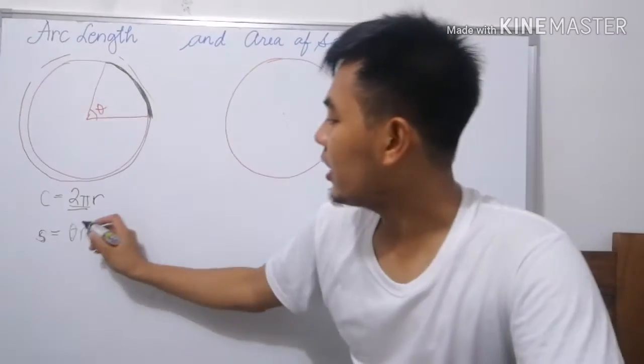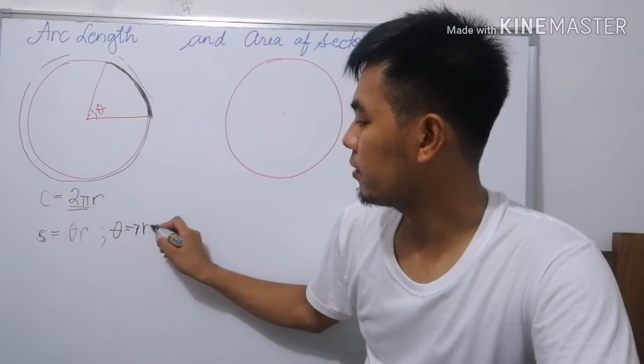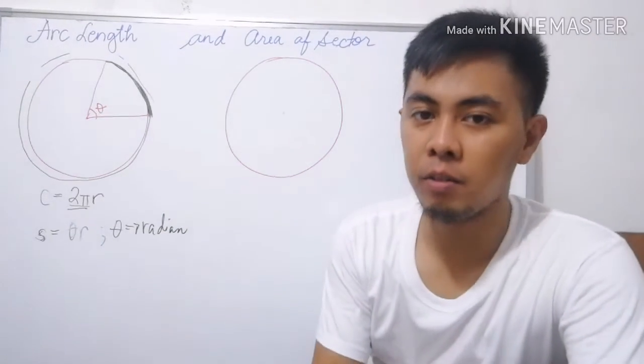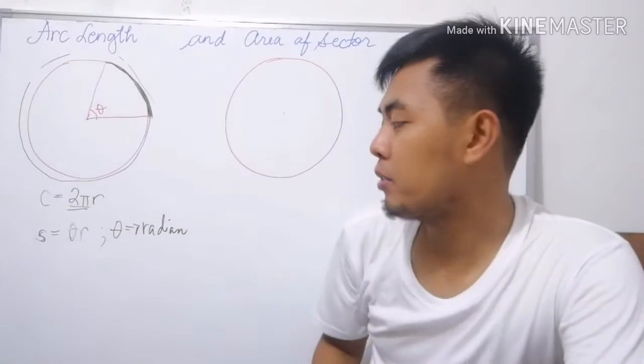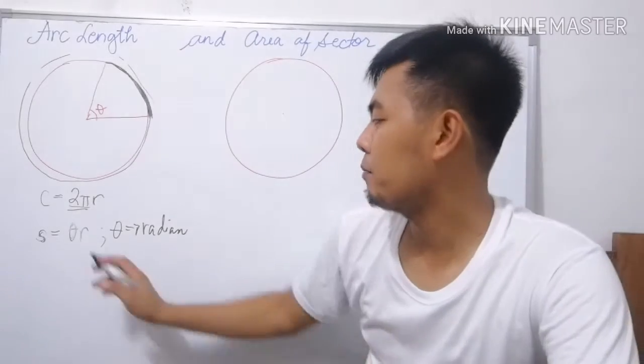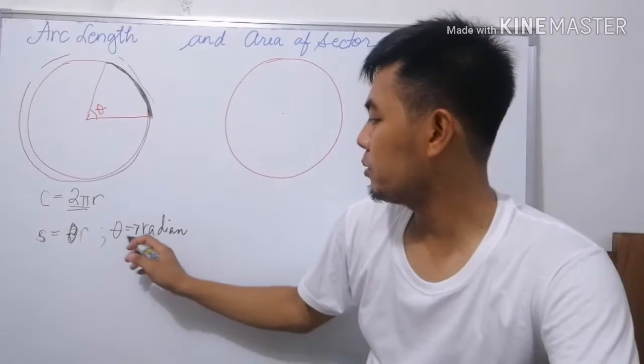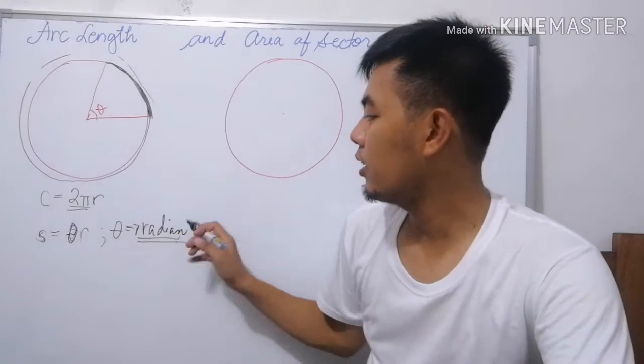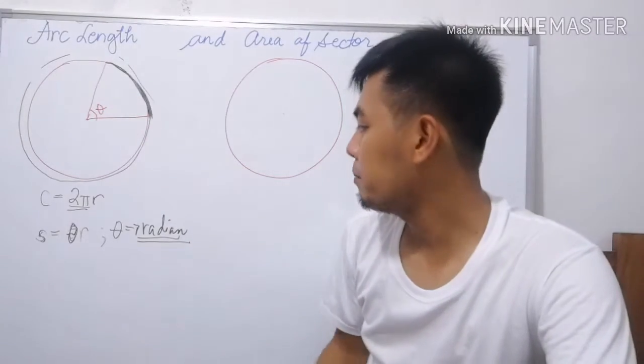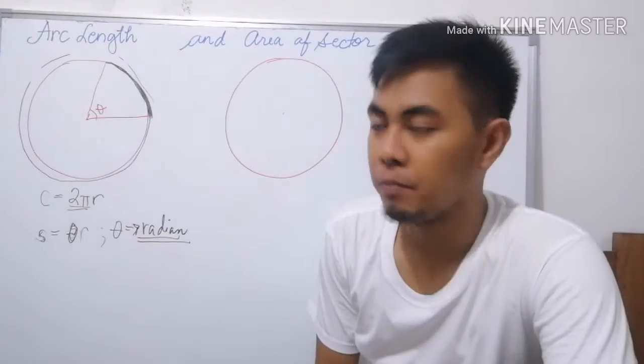But make sure that the theta should be in radians. So what we're going to use now is the formula S equals θR. Theta should be the degree measure of the angle, but of course, it should be in radians.